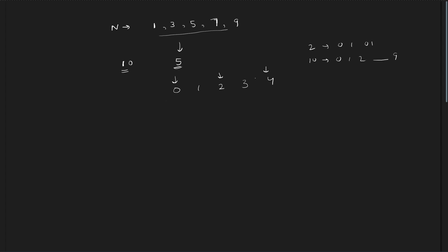We will need some way of mapping these base-5 values to other values — this is the most tricky part and varies from question to question. One easy way to find what values to map to is to form the answers for the first few values. For n=1 the answer is 1, for n=2 it's 3, for n=3 it's 5, for n=4 it's 7. So we map 1→1, 2→3, 3→5, 4→7. And obviously the remaining value 9 maps to the 0-remainder case.